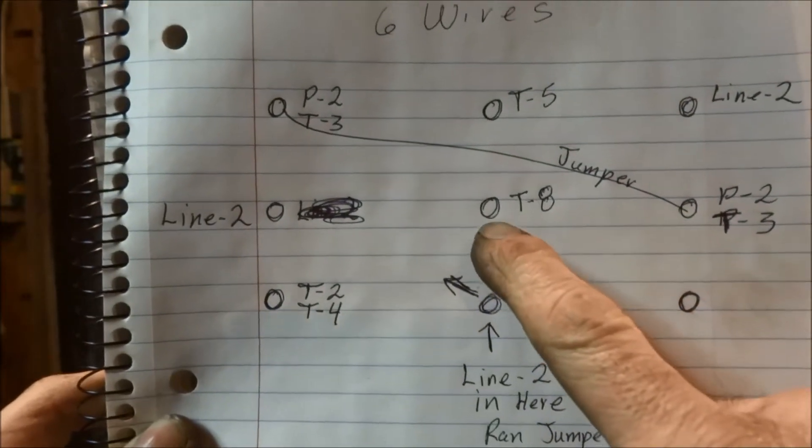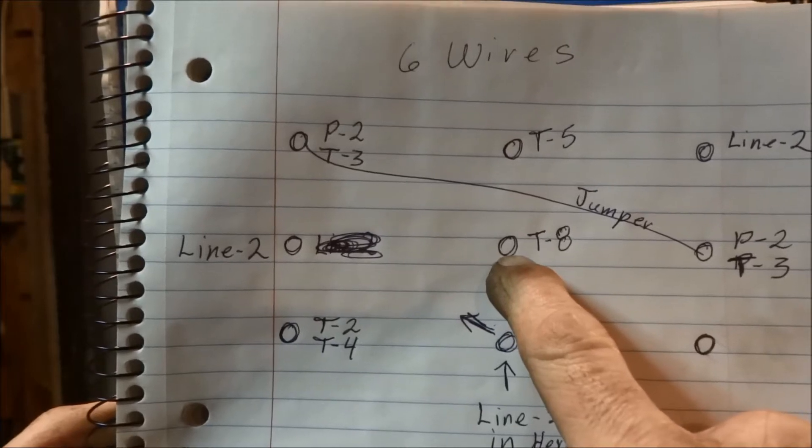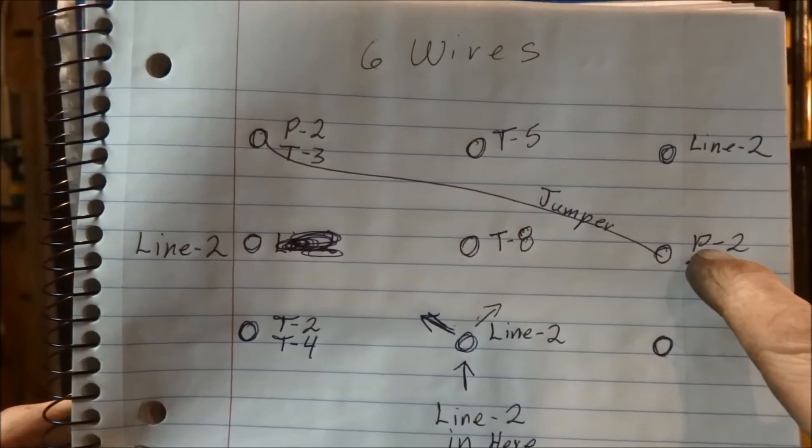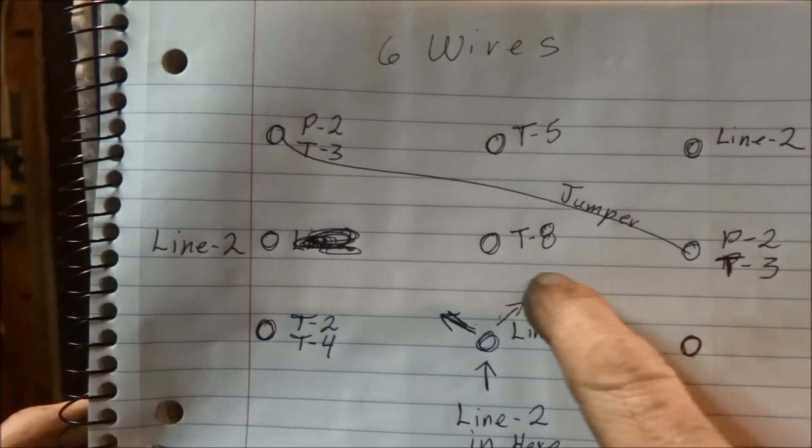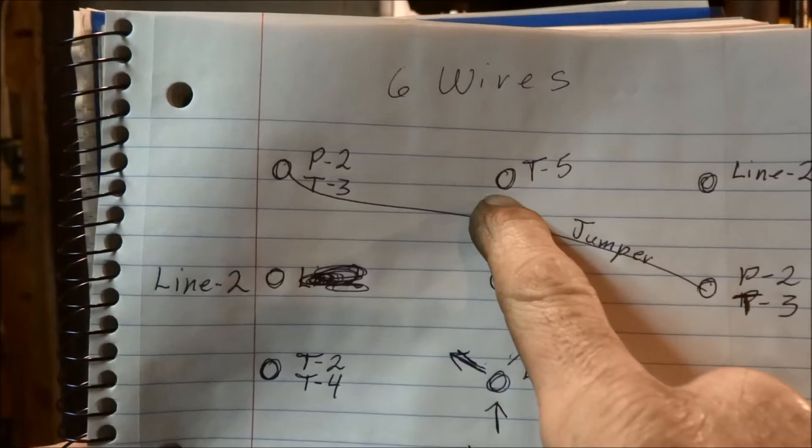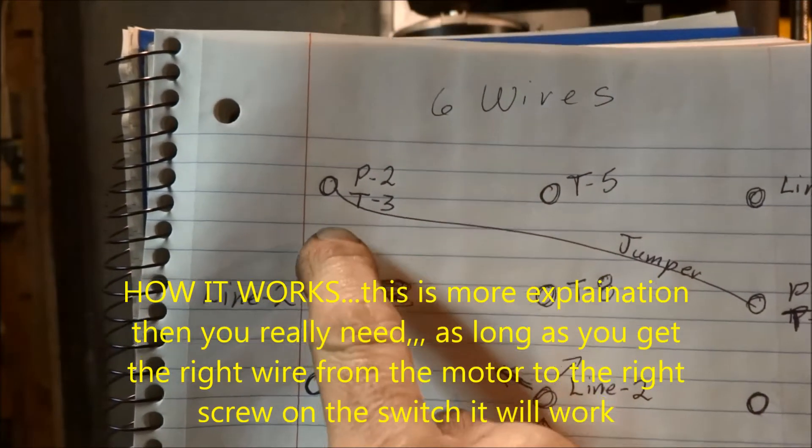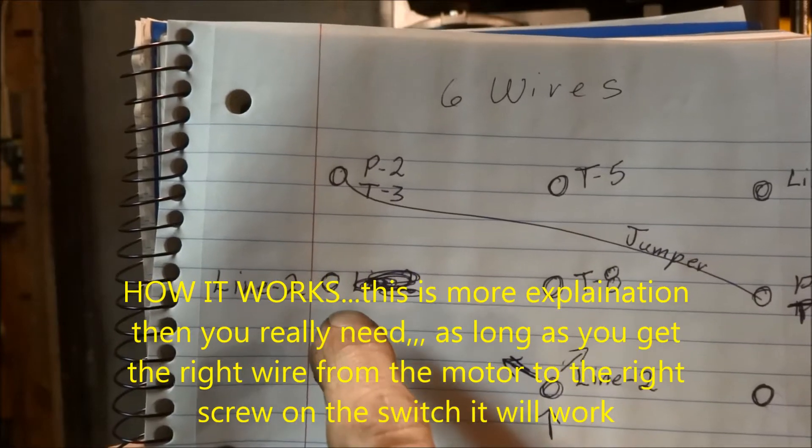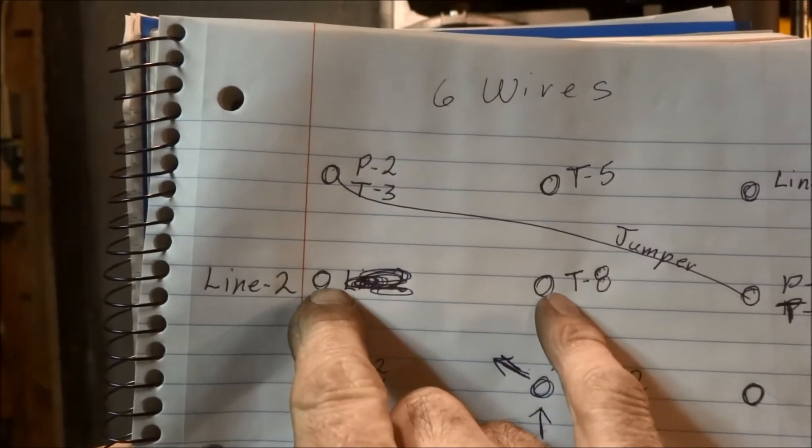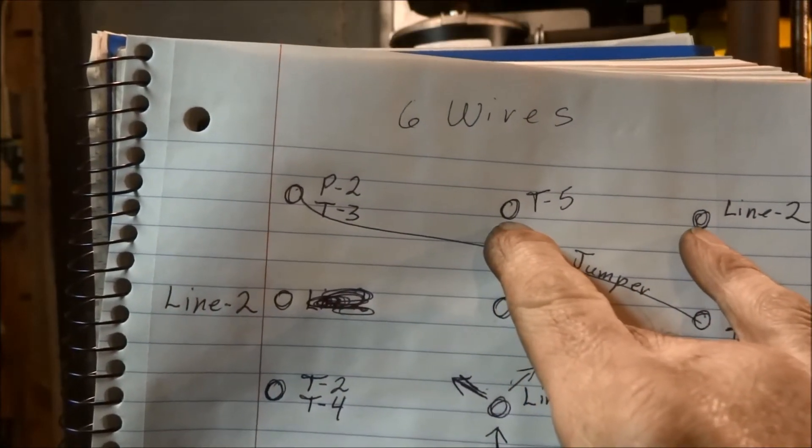So what you end up with is, because of the wiring diagram the way it is, the wiring in the motor the way it is, T8 has to be put with P2 and P3 to go one direction. To go the other direction, T5 has to be put with P2 and T3. T8 is powered. When it goes the other direction, T5 is powered.